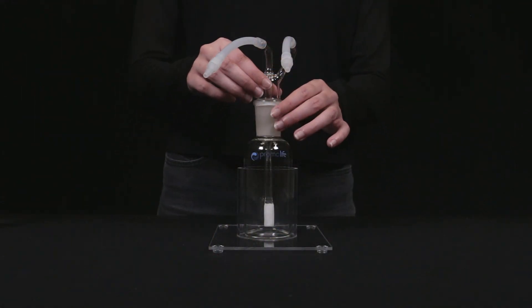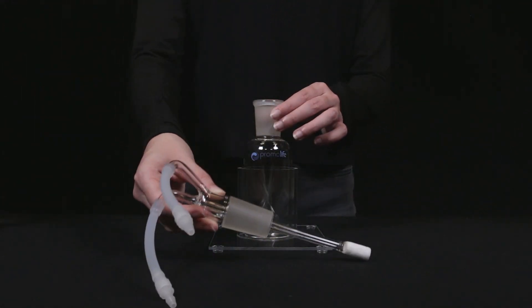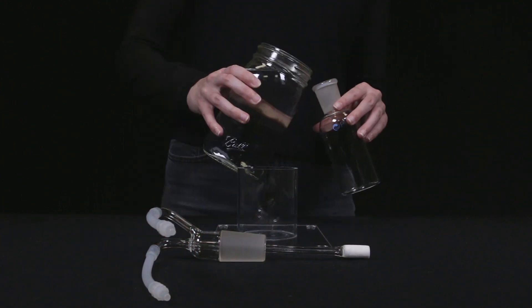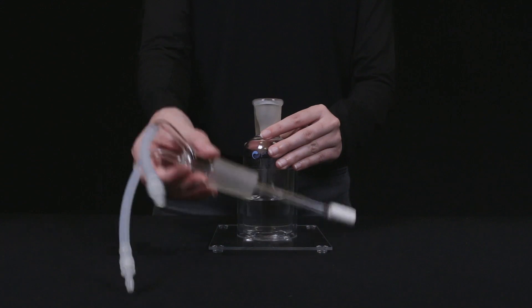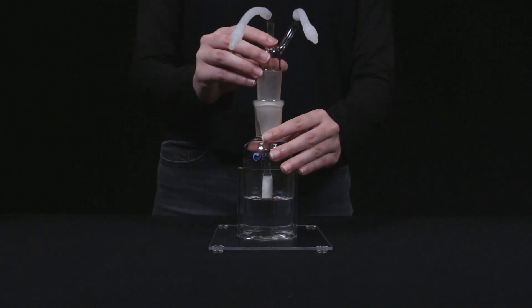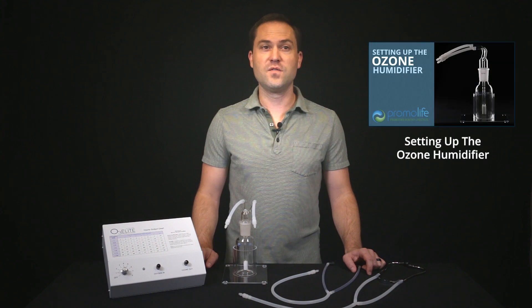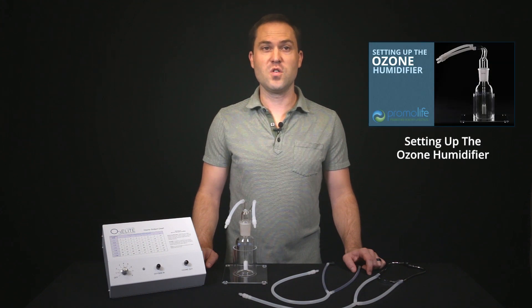For the case of the 200 mL Humidifier, you will want to take out the stem, fill the jar approximately halfway or until the diffuser is completely covered, put the stem back in the jar, and place the jar in the stand. For instructions on our 500 mL Humidifier, please view our video on setting up the Ozone Humidifier.